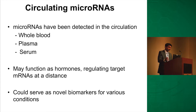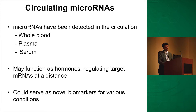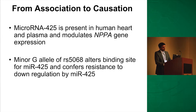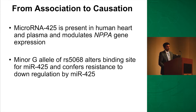We then went after looking whether we could detect the microRNA in circulation. Natriuretic peptides are very good biomarkers, and we wanted to see if the regulator is present in circulation and whether it can serve as a biomarker. We did see that dietary sodium in the AA genotype caused microRNA levels to go down — the microRNA levels detected in circulation are responsive to dietary sodium, but not so much in the AG genotype. Putting it all together from association to causation: microRNA 425 is present in human heart and plasma, it modulates NPPA gene expression, and the minor G allele of RS5068 alters the binding site for microRNA 425, conferring resistance to downregulation.